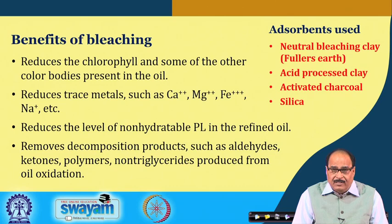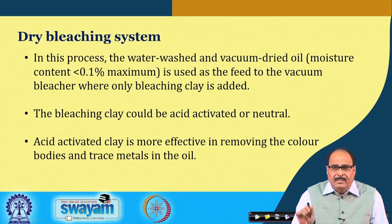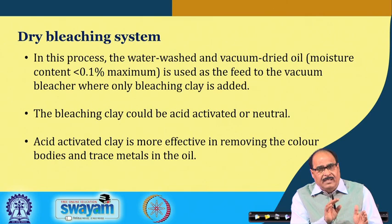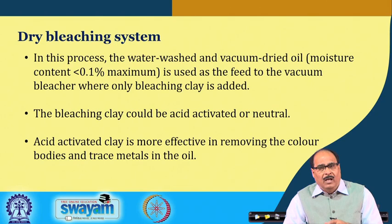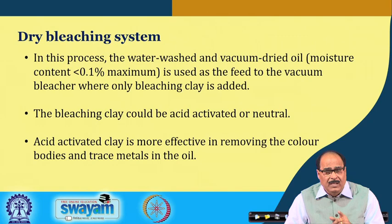The different adsorbents used include neutral bleaching clay, commonly known as fuller's earth, acid-processed clay, activated charcoal, and silica. The bleaching system may be a dry bleaching system or a wet bleaching system. In the dry bleaching process, water-washed and vacuum-dried oil with moisture content less than 0.1 percent is used as feed to the vacuum bleacher, where bleaching clay is added.